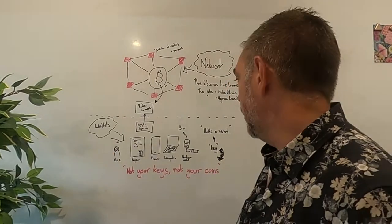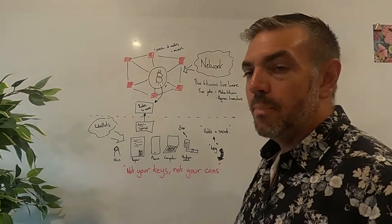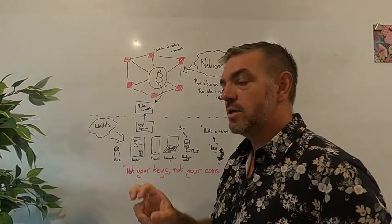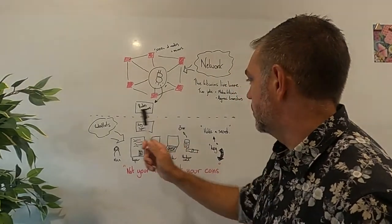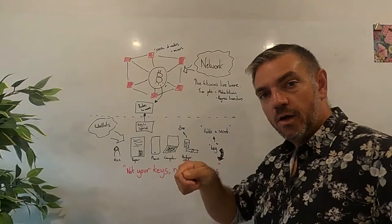Now, the wallets. The wallet has one job. It's to hold your secrets. Now, secrets are very important in Bitcoin. How you move your Bitcoin and how you know that you own them. So the job of the wallet is to hold a secret. We often refer to this secret as a key.